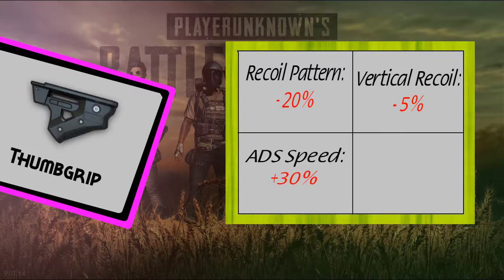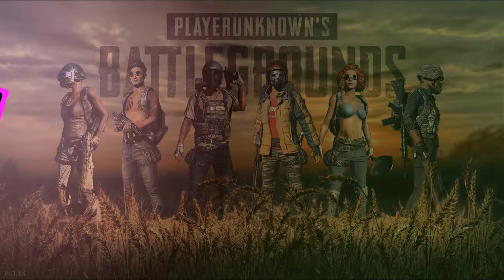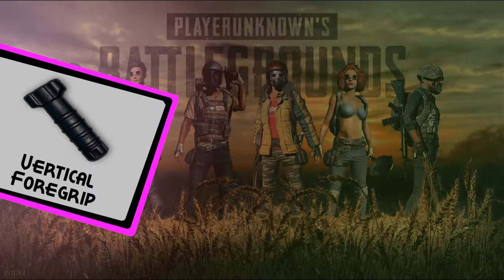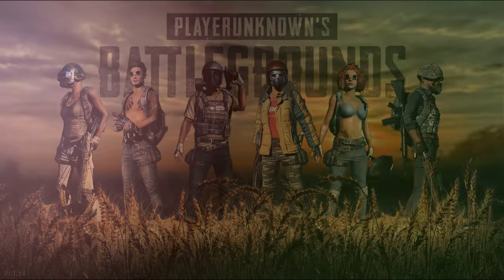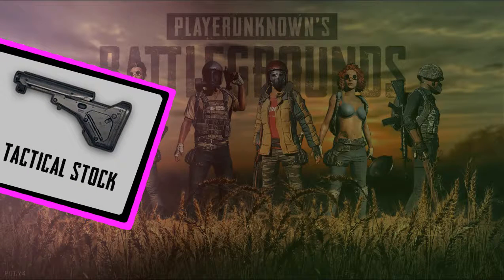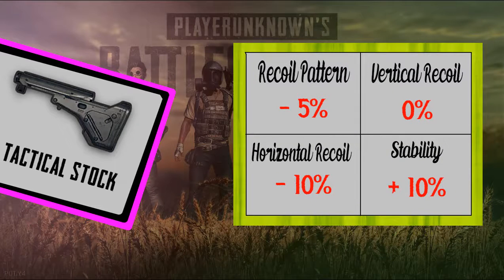The vertical foregrip reduces recoil pattern by minus 20%, vertical recoil by 15%, and stability by 5% — it's good. For the M416 and M16, the tactical stock reduces recoil pattern by 5%, reduces horizontal recoil by 10%, and increases stability by 10%.